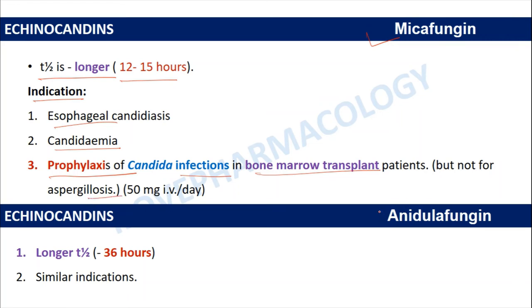The last echinocandin is anidulafungin, which has a longer half-life of around 36 hours, and its indications are similar to those of caspofungin.